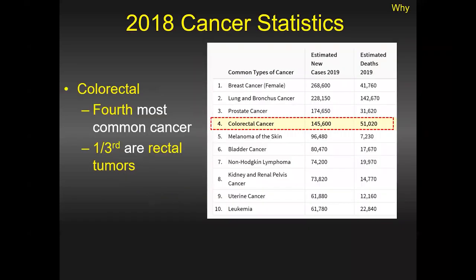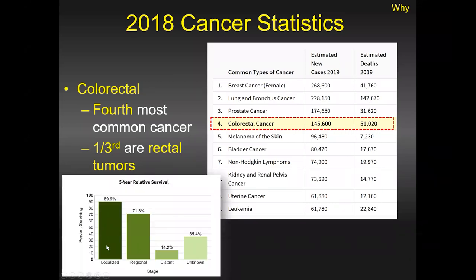The first question is why. Looking at 2018 data, rectal cancer gets grouped with colonic tumors. Colorectal cancers are the fourth most common type of cancer and about one third of these are rectal cancers — not a trivial number. The five-year survival is very good when the tumor is localized to the lumen and the patient gets appropriate therapy, but drops significantly as the disease becomes regional or distant. That's why we must be diligent in accurately staging these patients.